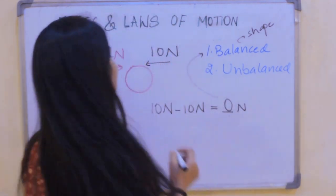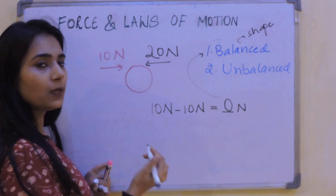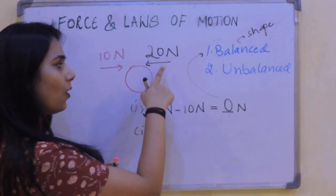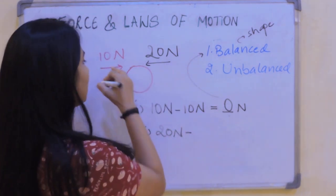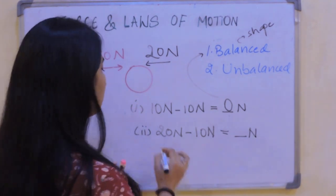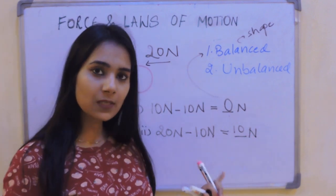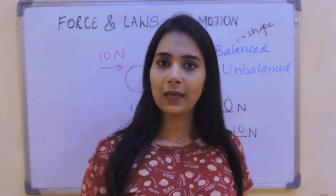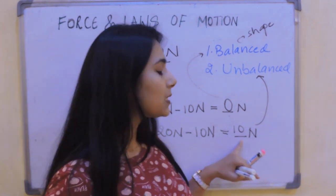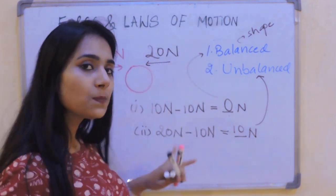Next we have unbalanced force. Let's take this ball and this time I apply a 20 Newton force from one direction and 10 Newton from the other. We take the bigger value: 20 Newton minus 10 Newton gives a net force of 10 Newton. Since some net force is acting on this ball, this is known as an unbalanced force. This unbalanced force results in a change in the state of motion, state of rest, direction, size, and shape of an object.